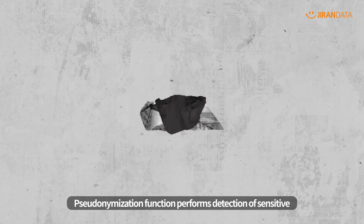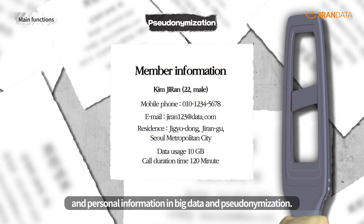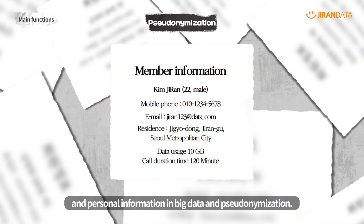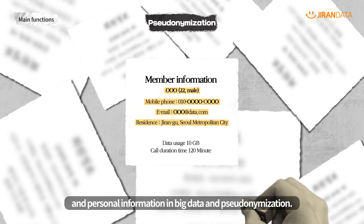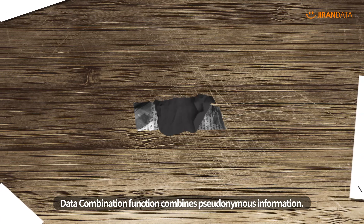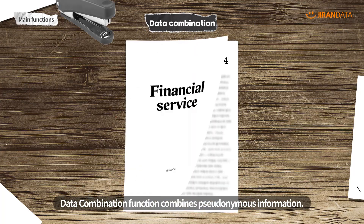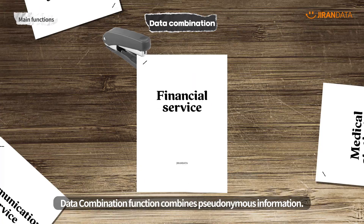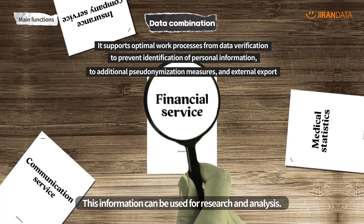The pseudonymization function performs detection of sensitive and personal information in big data and pseudonymization. The data combination function combines pseudonymous information, which can be used for research and analysis.